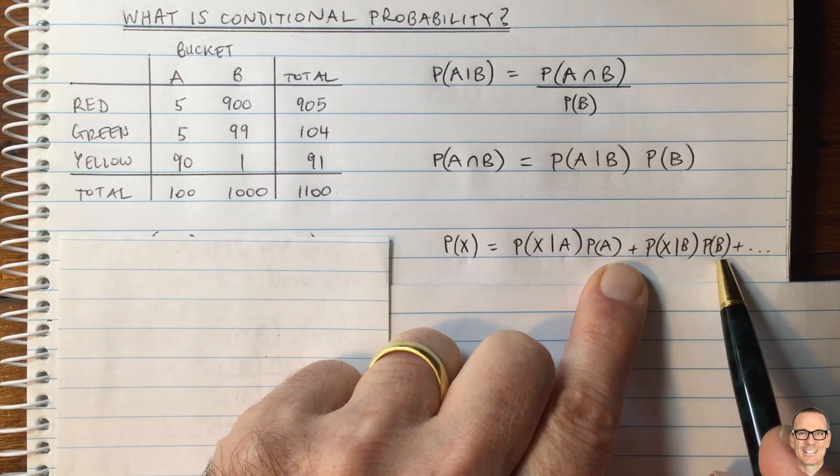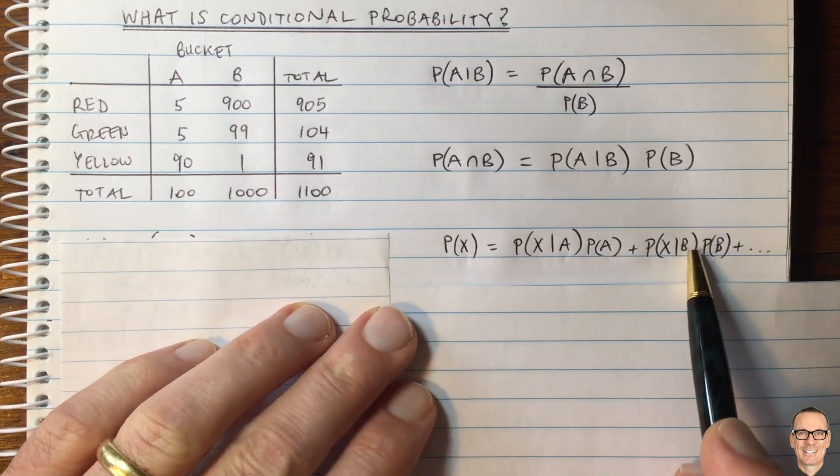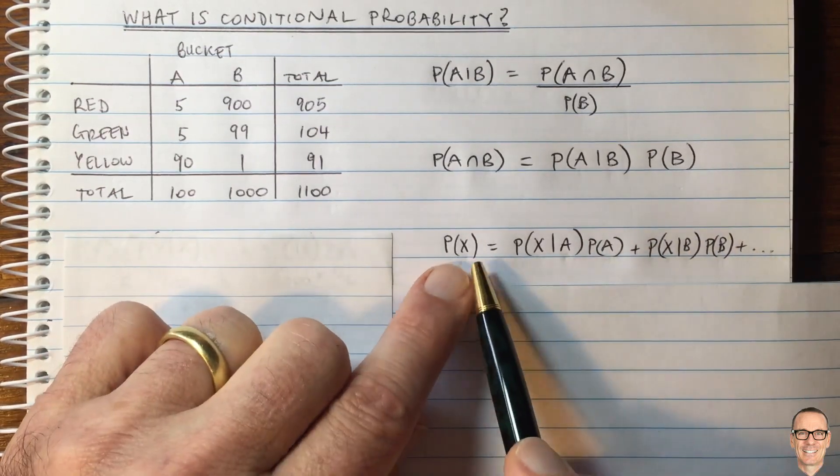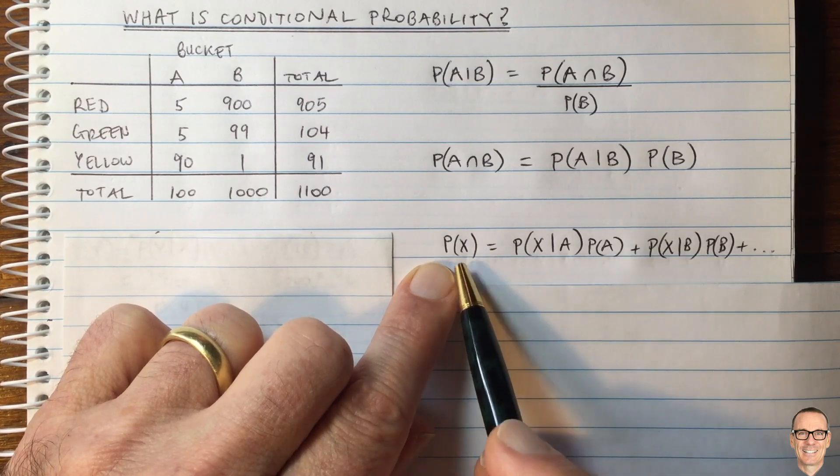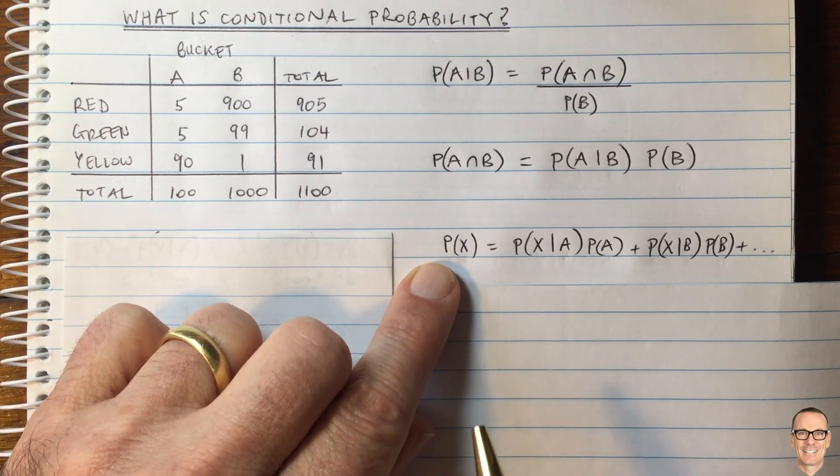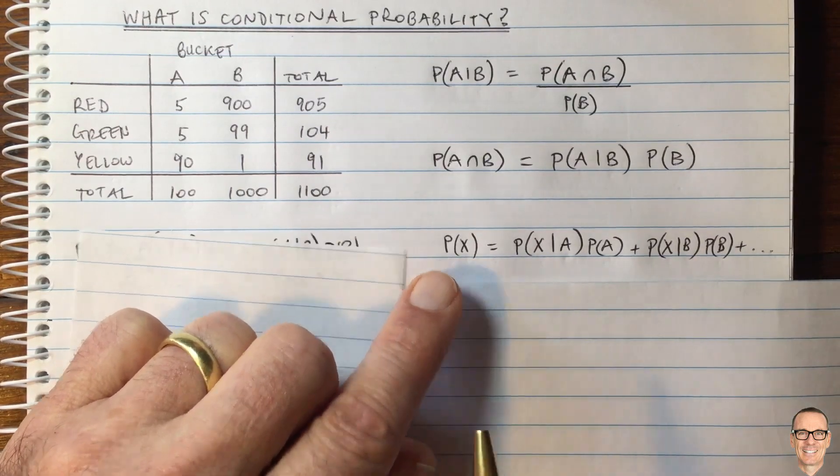plus you've got to add up all the other terms that could possibly happen. If you do this for all the things that could possibly happen, then you'll get the overall probability for X. Let's see it in action and hopefully it gives more intuition into this important expression.